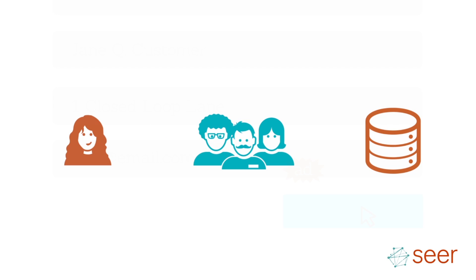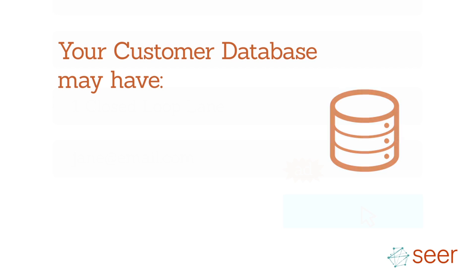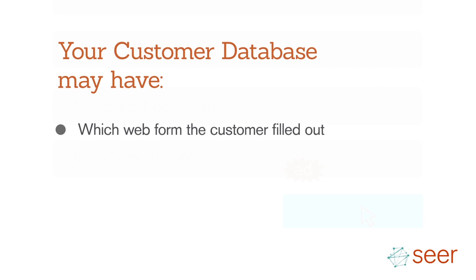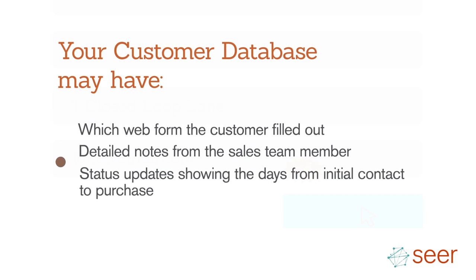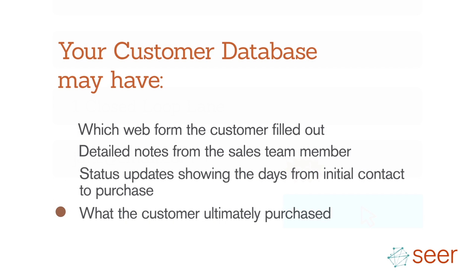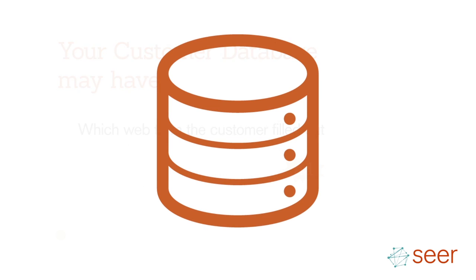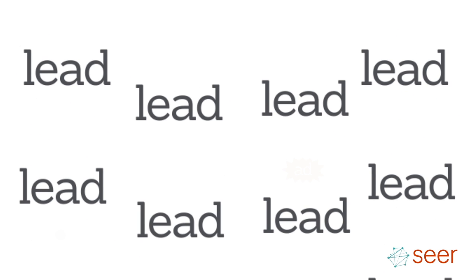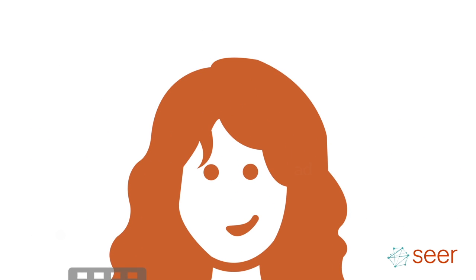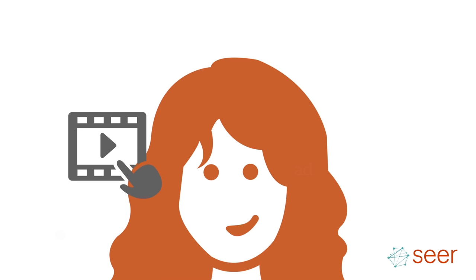At the end of the process, the customer decides to purchase your product or service and the salesperson records the purchase amount in the customer database. So, your customer database may have which web form the customer filled out, detailed notes from the salesperson, status updates showing the days from initial contact to purchase, what the customer ultimately purchased, and how much the customer paid. Here's the problem for your sales team: once the leads originally arrive in the customer database, they all look the same. There's no visibility upstream into the prospect's previous website engagement.